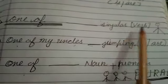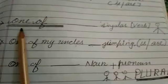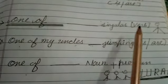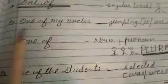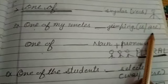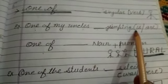Next rule: 'One of' expression is followed by a singular verb. Whenever you see this expression, apply a singular verb. For example: 'One of my uncles __ jumping.' Options are is or are. Since 'one of' is used, apply singular verb — that is 'is.' One of my uncles is jumping.